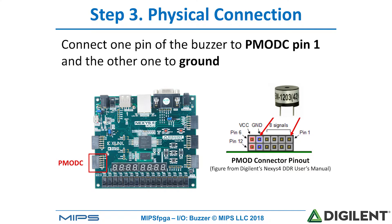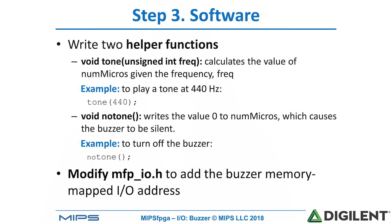It doesn't matter which of the pins goes to ground and which one goes to pin 1. The final step is to write software to write this memory mapped I/O value. We'll write two helper functions: tone and no-tone. Tone takes the input argument of frequency, calculates the number of microseconds in half a cycle of that frequency, and writes that value to num_micros using memory mapped I/O. No-tone sets the value of num_micros to zero, which outputs no tone on the buzzer. We'll also modify the header file MFP_IO to show this memory mapped I/O.